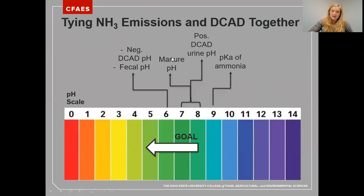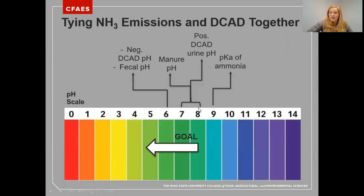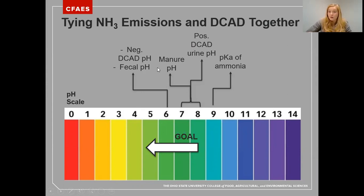That is going to be tying in manure ammonia emissions with DCAD. The pKa of ammonia is about 9, meaning that in an aqueous solution at a pH of 9, 50% of the ammonia will be in the ammonia form and 50% will be in the ammonium form. Tying that in with DCAD, the urine pH from a positive DCAD-fed cow will be about 8.5, whereas the urine pH from a negative DCAD-fed cow will be about 6.2 to 6.8. Fecal pH will be in that same range, and so mixing those two together to form a manure slurry pH of less than 7 is potentially enough to show a significant reduction in manure ammonia emissions.